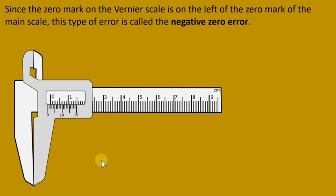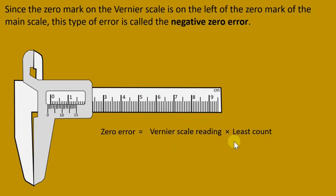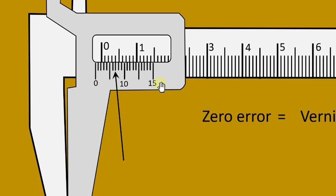Zero error is given by: Vernier scale reading times least count. The Vernier scale reading is taken from the line on the Vernier scale which makes almost a straight line with another line on the main scale. The line at which the arrow is pointing makes a straight line with a line on the main scale, so this is the line we read from.